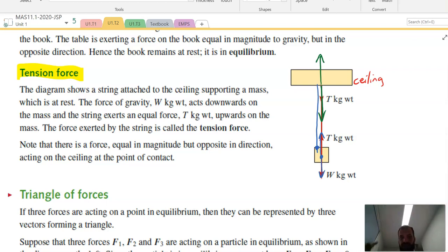So that diagram was from your textbook. Just remember that there's tension down from the ceiling, there's tension up from the object, there's weight down from the object. But there's also tension up from the ceiling, otherwise the ceiling falls down.